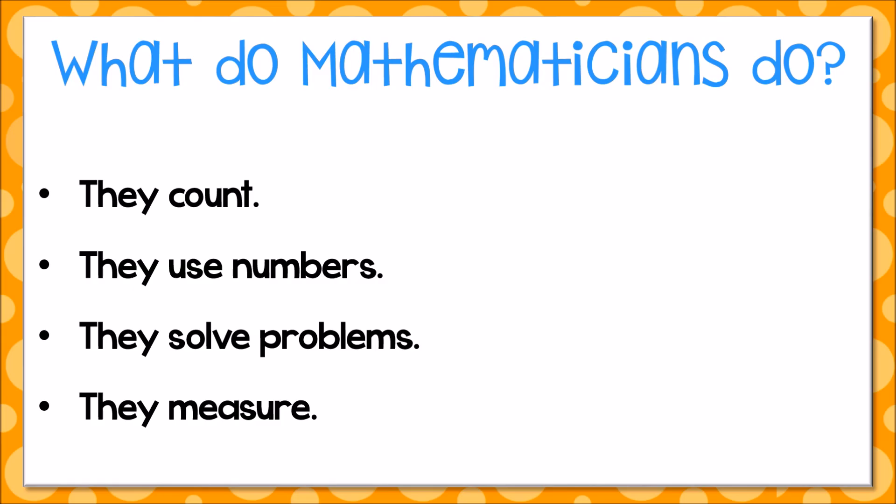But there are also some other habits that mathematicians have or some other things that mathematicians do. They do things like they make mistakes and they learn from those mistakes. They try and try again. When something doesn't work, they think about how they can try it differently.